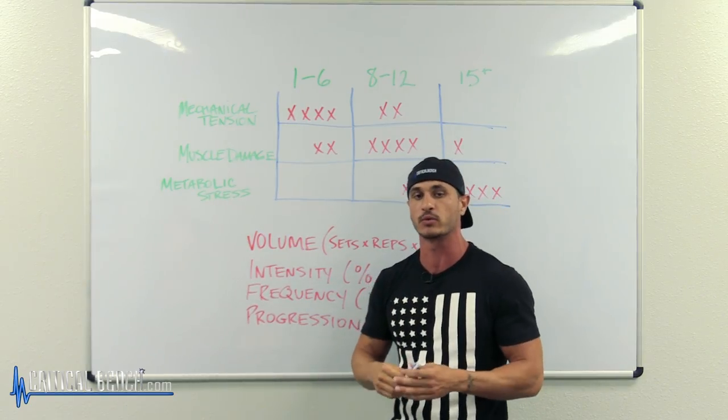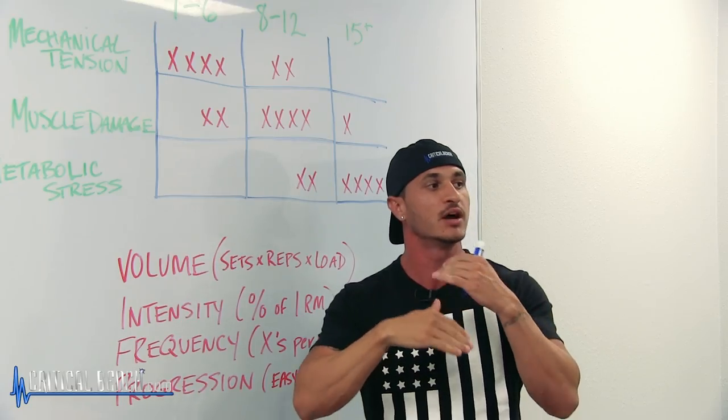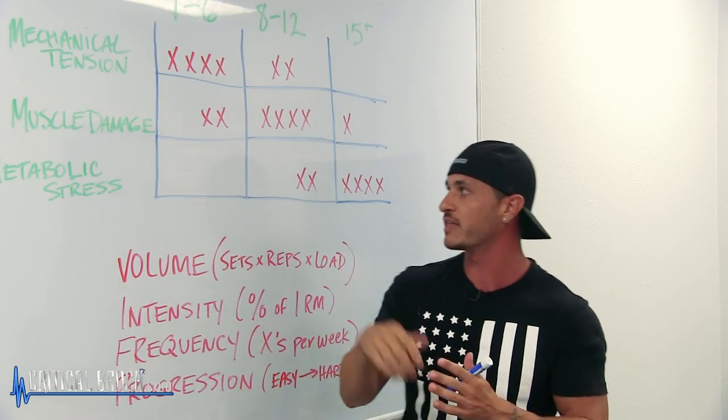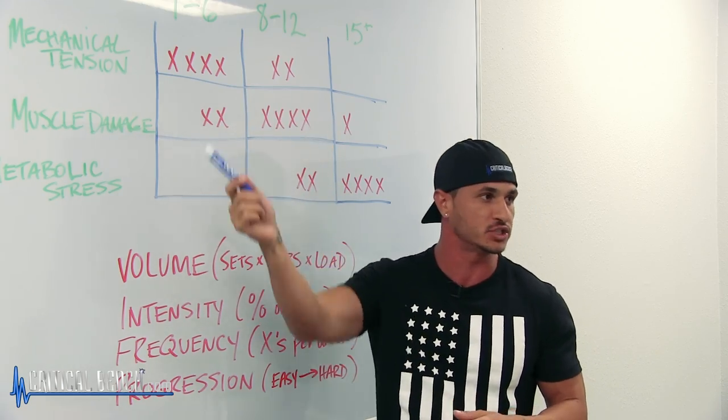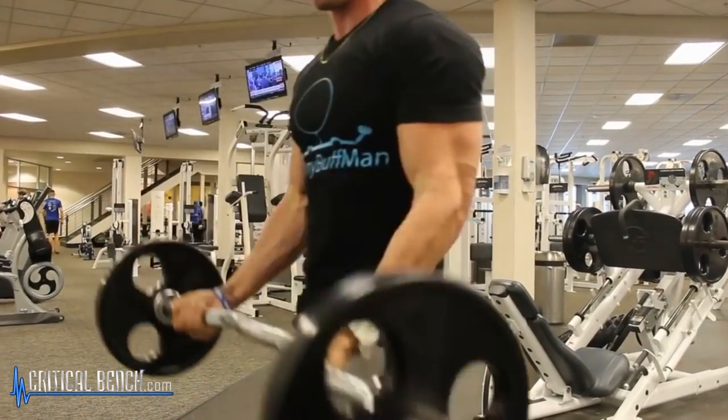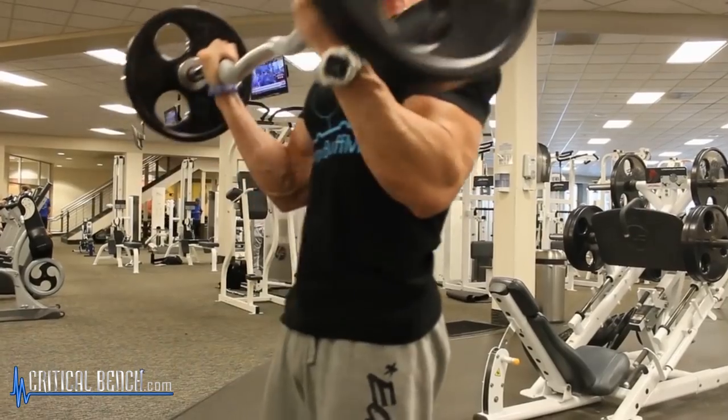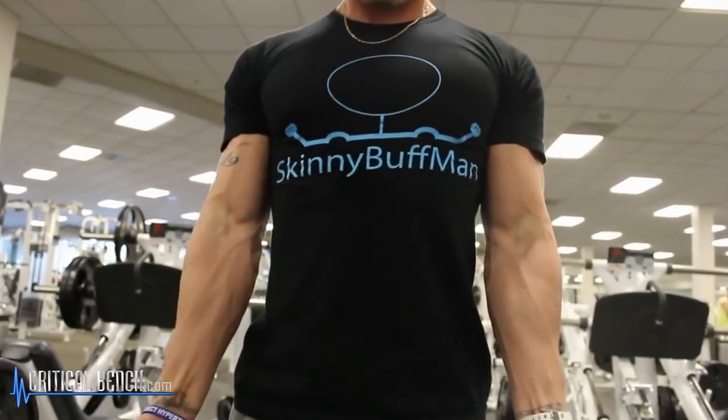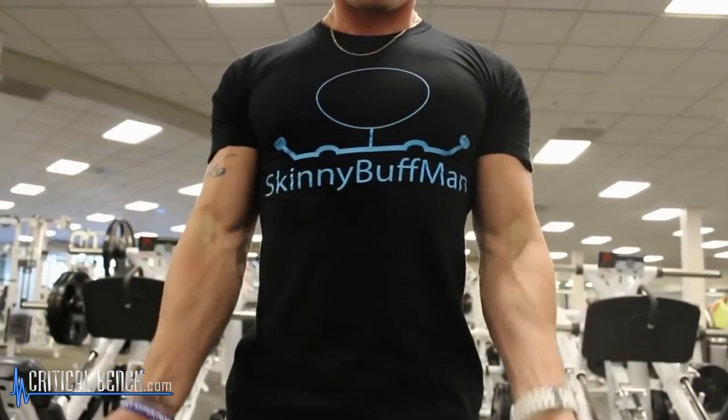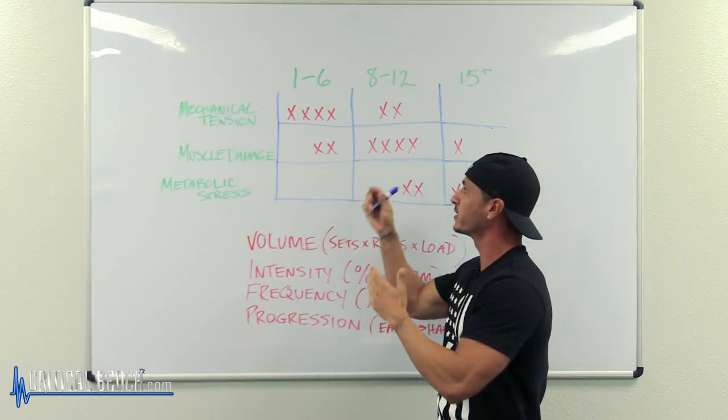The first day would be your heavy day or your strength day. The second day will be your hypertrophy day where it's still a moderate intensity but it's higher volume. And then the third day would be your metabolic stress day where you'll go lower intensity for more volume. That way you're getting all these adaptations and they're kind of feeding each other, so you're getting bigger and stronger over the course of your macro cycle, meso cycle, and so forth.